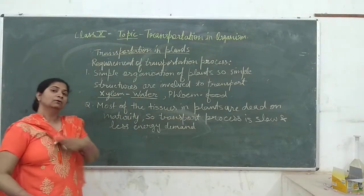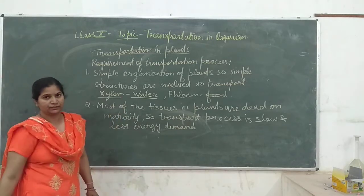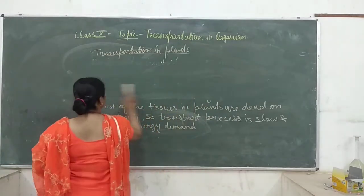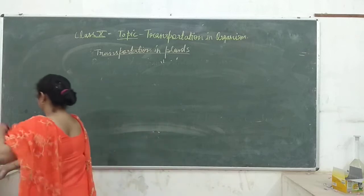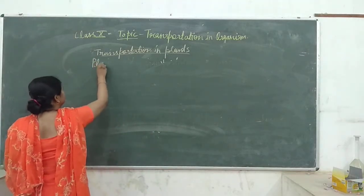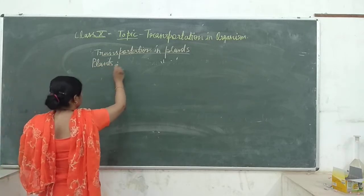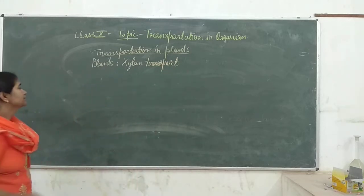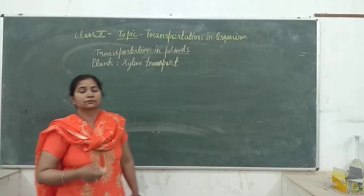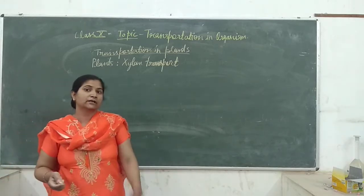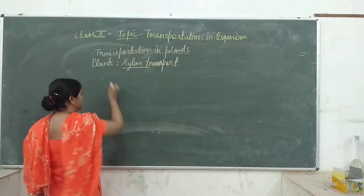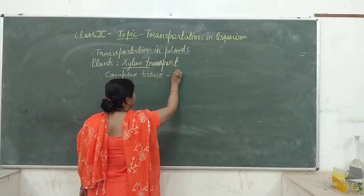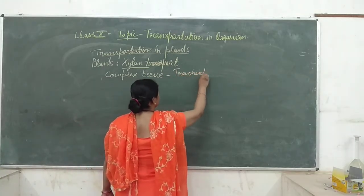Now we will move to the next topic: water transport, which involves the xylem tissue. We will learn how xylem performs water transport in the plant. Xylem is a complex plant tissue and it is made of tracheids. The main elements which transport water are tracheids and vessels.